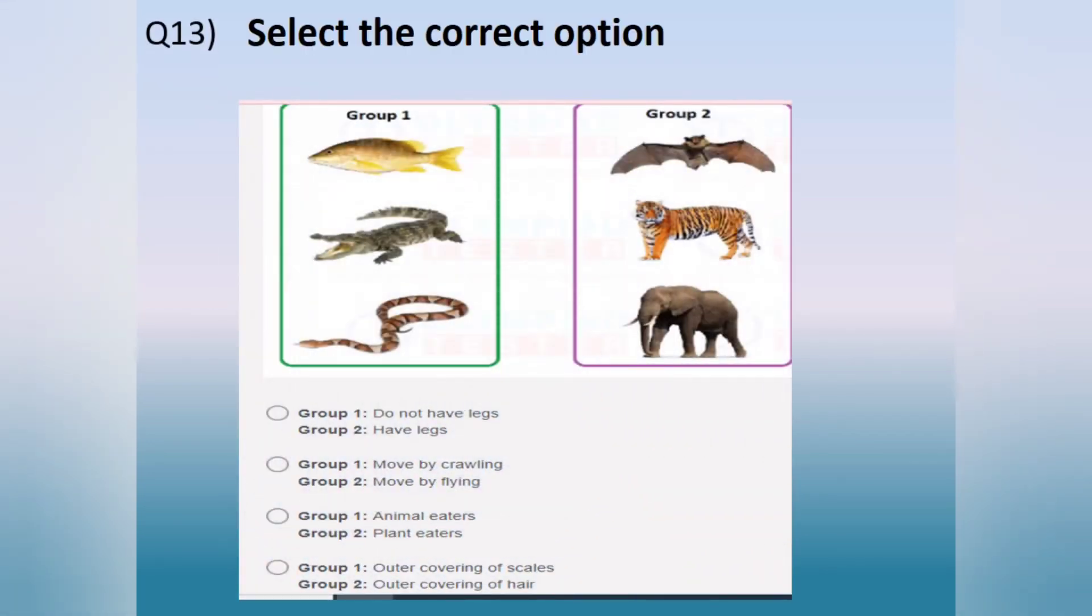Question number 13. Select the correct option. Option A. Group 1 do not have legs. Group 2 have legs. Option B. Group 1 move by crawling. Group 2 move by flying.